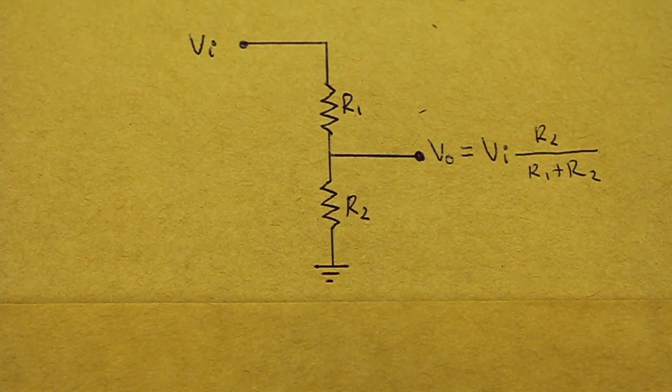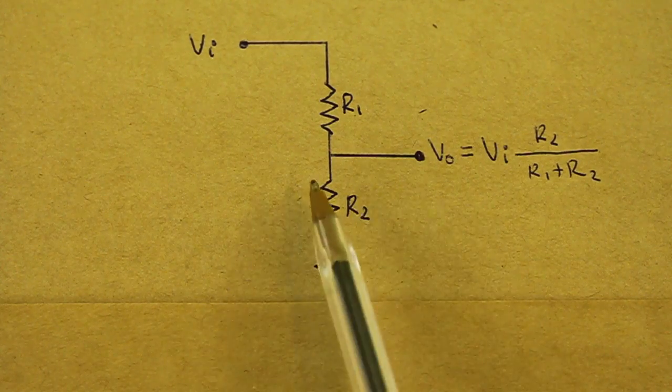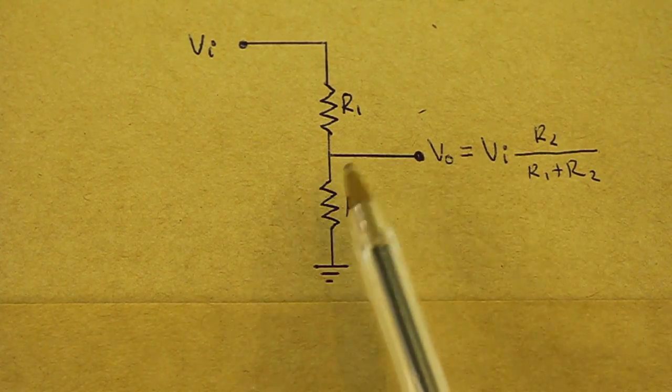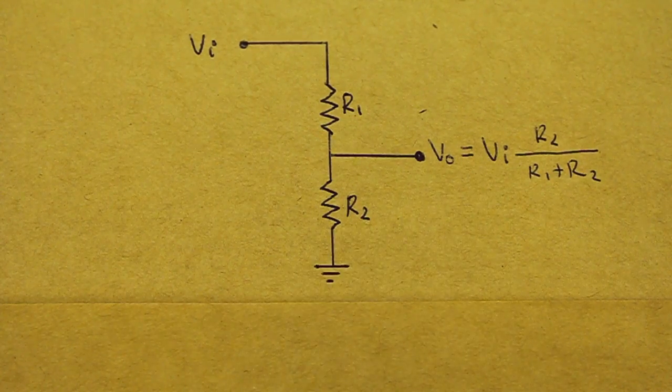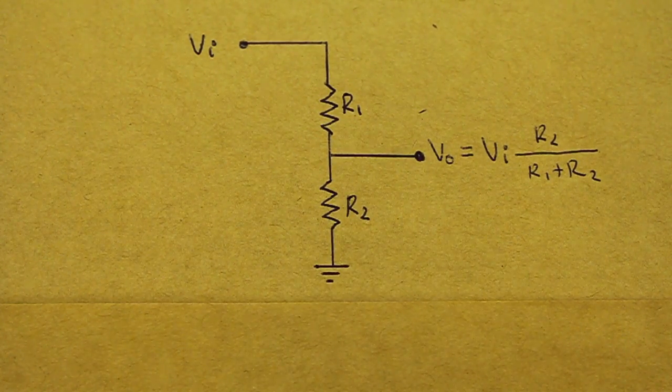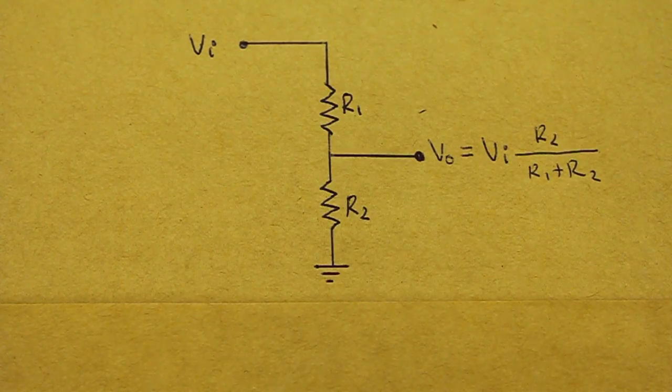For example, if we have 10 volts at the input, we can have 2 volts here, which is the voltage at resistor 2 and, of course, the remaining 8 volts will be the voltage at resistor 1.